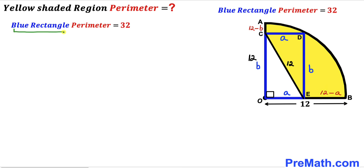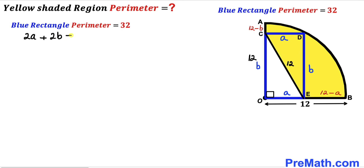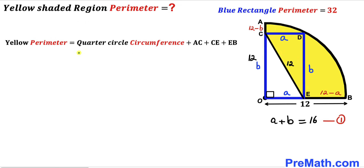The blue rectangle perimeter is given as 32, and the perimeter equals a plus b plus a plus b, which simplifies to 2a plus 2b equals 32. Dividing every term by 2, we get a plus b equals 16. We'll label this Equation 1.